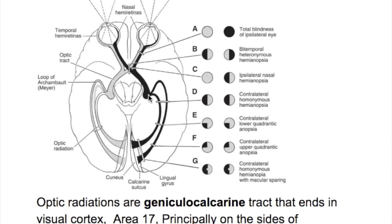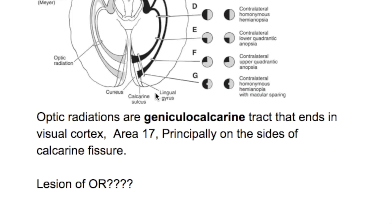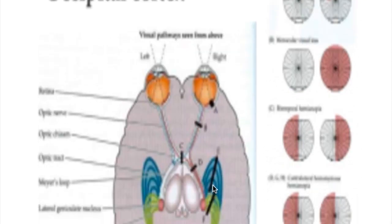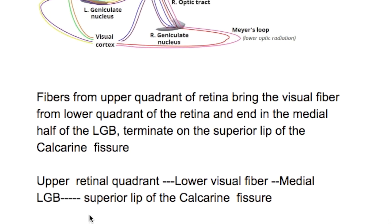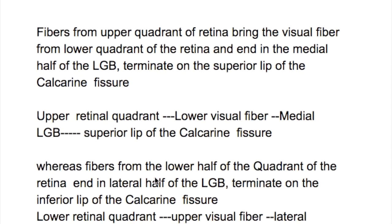Optic radiation refers to the fibers that emerge from the lateral geniculate body, also known as the geniculocalcarine tract. They have two sets of fibers: a superior group and an inferior group, each taking a different route. The fibers from the upper quadrant of the retina carry lower visual field fibers, end in the medial half of the lateral geniculate body, and terminate on the superior lip of the calcarine fissure. The fibers from the lower quadrant of the retina end in the lateral half of the lateral geniculate body and terminate in the inferior lip of the calcarine fissure in the visual cortex.